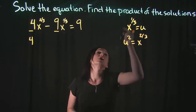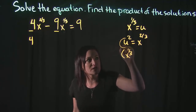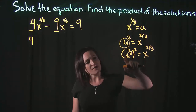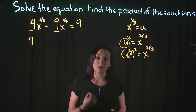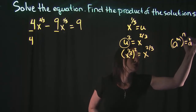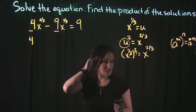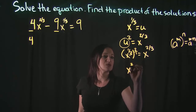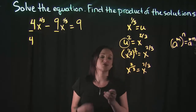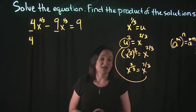Let me show you how this works. If u equals x to the 1/3, and I raise that to the 2nd power, that's going to be the same as x to the 2/3. This is called the power rule — specifically power rule 2 — which says that if you have an exponent raised to another exponent, you multiply those exponents together. So 1/3 times 2: 1 times 2 is 2, 3 times 1 is 3, giving x to the 2/3. So u squared is the same thing as x to the 2/3.